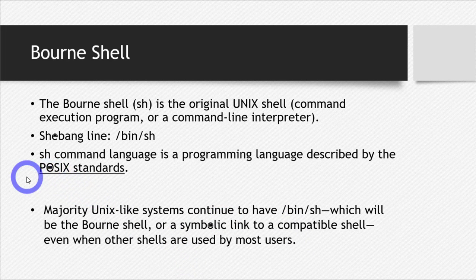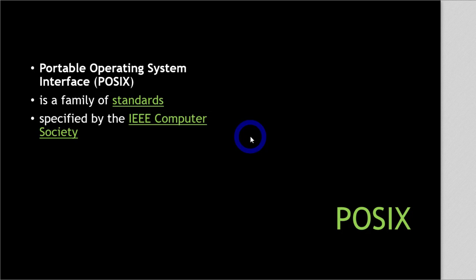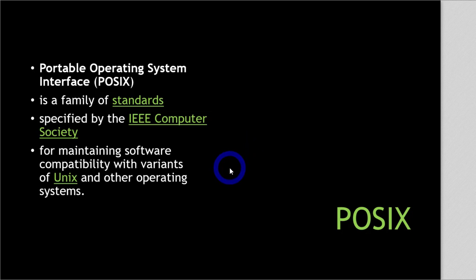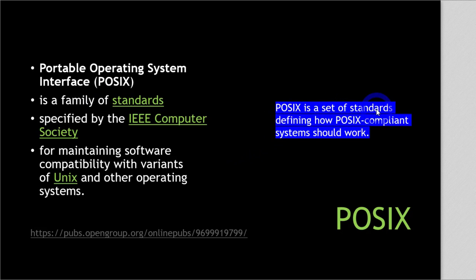I used two more terminologies: POSIX and shebang line. POSIX stands for Portable Operating System Interface, and it is actually a set of standards defined by IEEE. These standards are set to differentiate Unix and Unix-like systems from other operating systems, and they are used for maintaining software compatibility with variants of Unix. If you want to study POSIX in detail, you can go to the open group-based specifications, issue number 7, published in 2018. The summary is: POSIX is just a set of standards which define how POSIX-compliant systems should work.